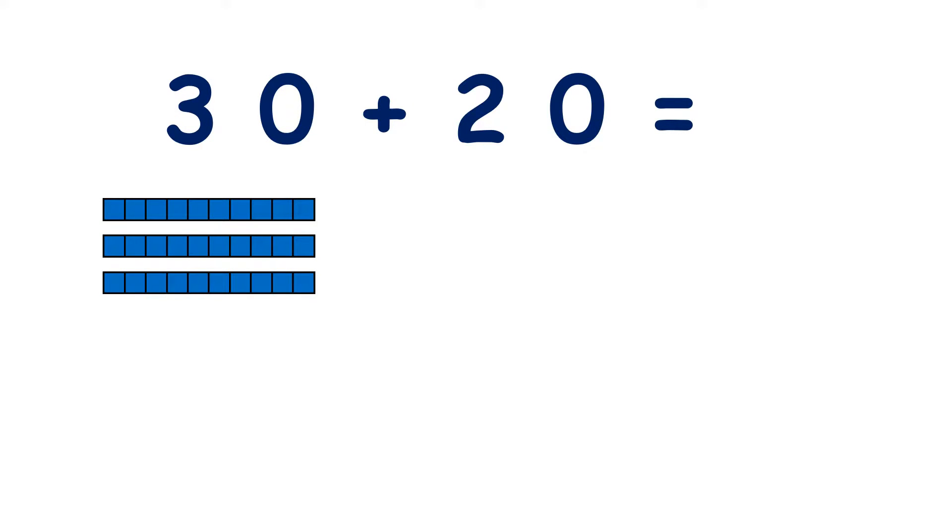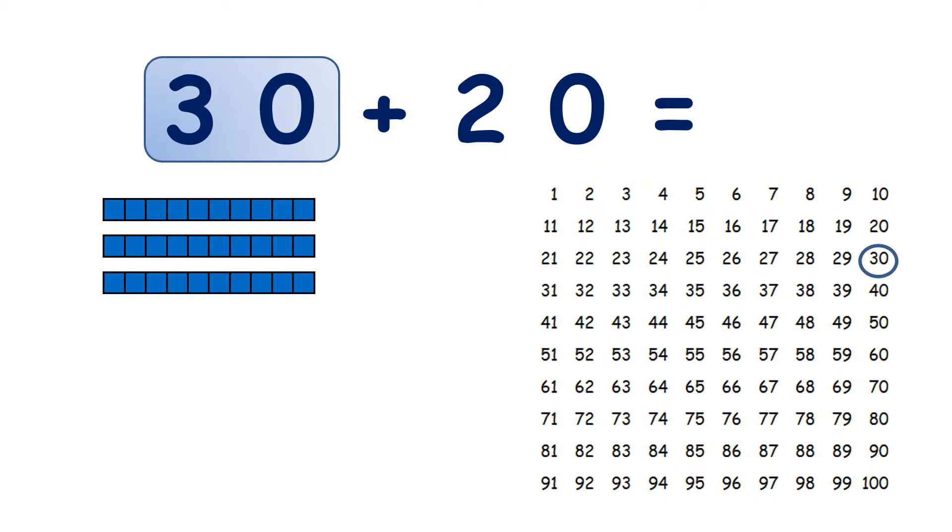So here we have 30 plus 20. We start with 30, so I can find 30 on my 100 square. And if I want to add 20, I know that 20 is 2 tens.